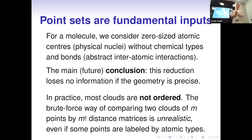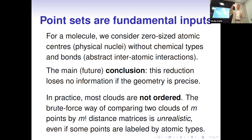It makes sense to consider only point sets, because even the QM9 database contains only coordinates of atoms without bonds. Bonds are not initially present in the database; there are software programs that reconstruct covalent bonds from three-dimensional coordinates, but that is an extra step. The most basic input is only a point cloud.